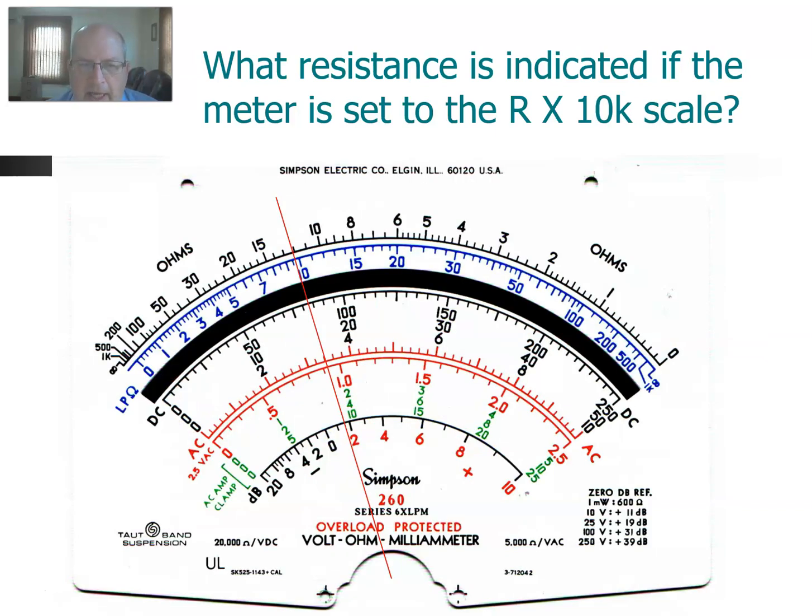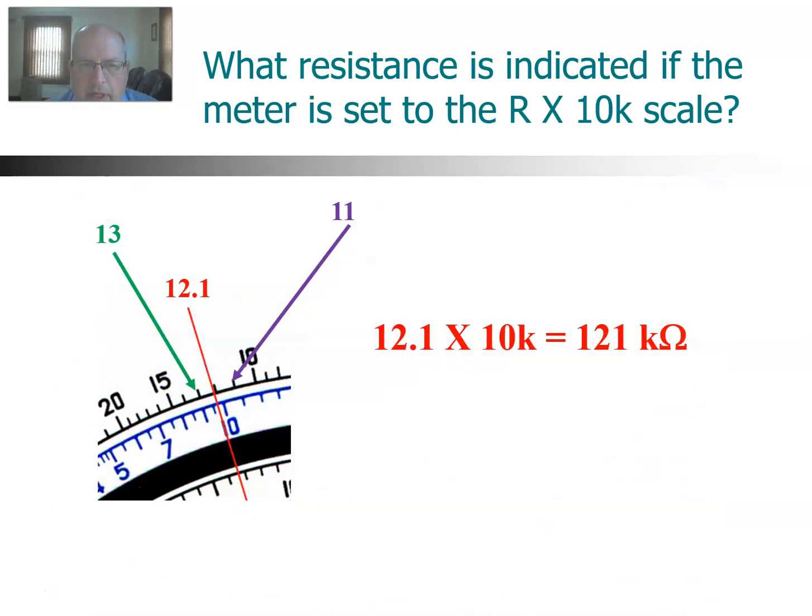And then there's a 10K scale. We've zeroed it right after we adjusted to 10K. Now we're taking the reading, and we see our reading is somewhere between 10 and 15. If we count the hash marks there, each one is worth basically 1. We'll go 10, 11, 12, 13, 14, and then 15. We are somewhere between the 12 and the 13, but really close to the 12. So I'm going to call that 12.1. 12.1 times 10K gives 121 kiloohms.